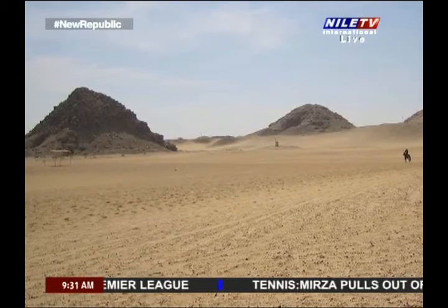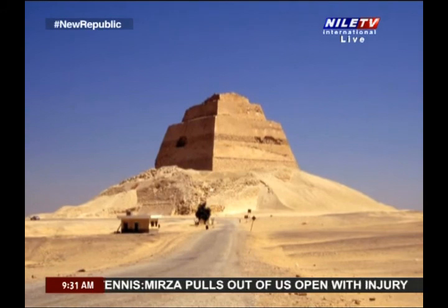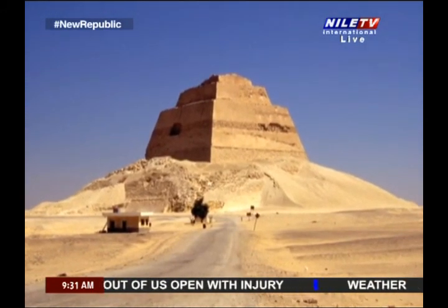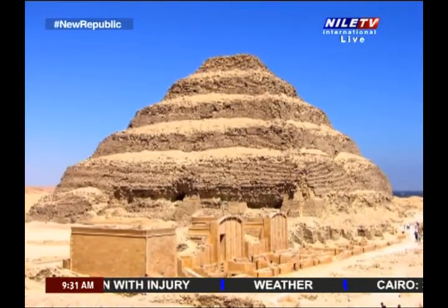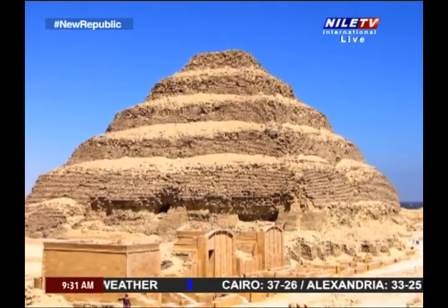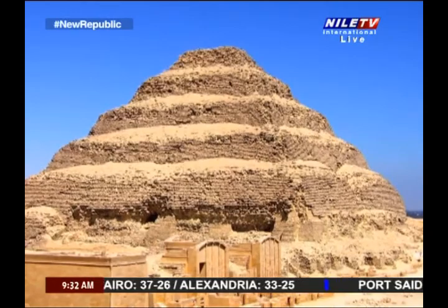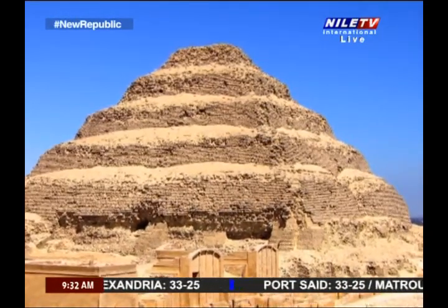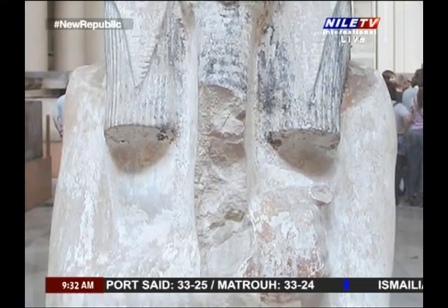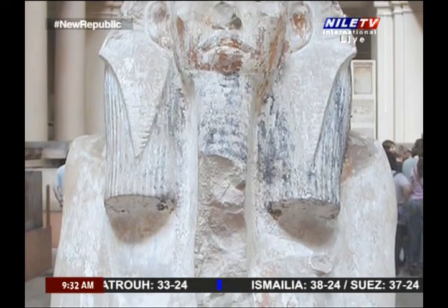The pyramid builders' area stretches from Abu Rawash in the north until Maidum in the south. The third dynasty ruled Egypt for more than 70 years through six kings. The most famous king in the third dynasty was King Zoser.